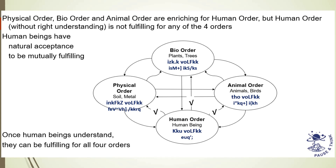There are four classifications — four orders. The first one is the physical order, the second one is the bio order, the third one is the animal order, and the fourth one is the human order. The physical order includes units like air, water, and metal. The bio order includes grass, plants, and trees. The animal order includes animals and birds, and the human order includes human beings.